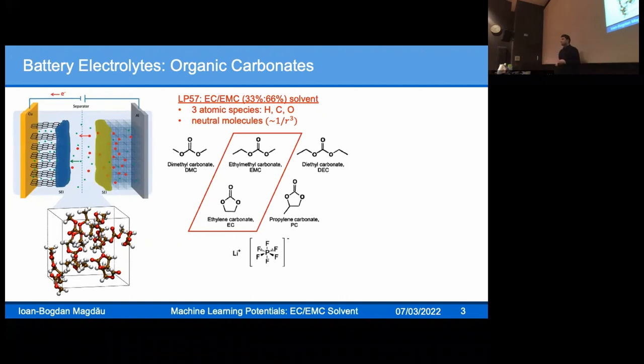The high mobility is achieved usually with a linear carbonate, in this case EMC, that has a low dielectric constant but high mobility. The dissolution of the salt is achieved with a cyclic carbonate, in this case EC, that has a high dipole moment and therefore a high dielectric constant, which contributes to dividing the two ions apart.